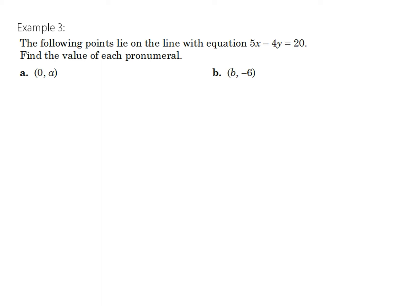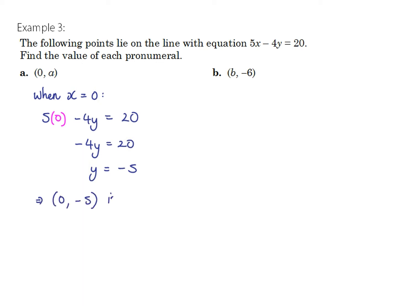We're told two points lie on this line. For the first point, with x equal to 0 and an unknown y value, we substitute x equals 0: 5 times 0 minus 4y equals 20, giving negative 4y equals 20, so y equals negative 5. Therefore a equals negative 5.